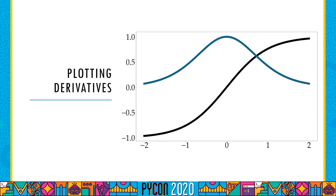We can go ahead and plot this, and it's so easy. It lets us think about our problem instead of about how we implement our code. For example, we might notice from looking at this plot that our derivative is just a function. What happens if we apply grad to our derivative? Well, we'll get something called a second derivative. And it turns out that we can just keep on doing this by wrapping grad around the derivatives that we get.